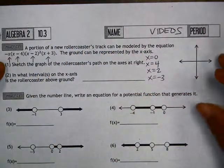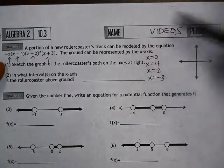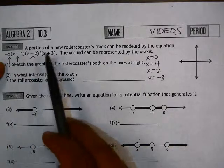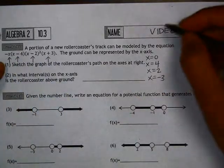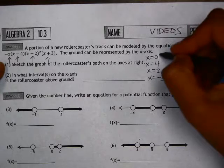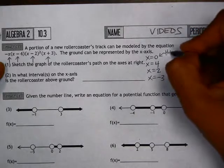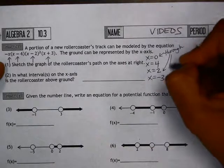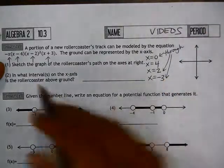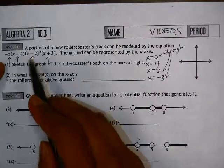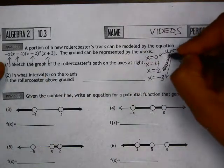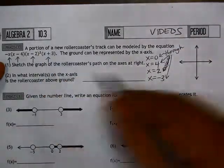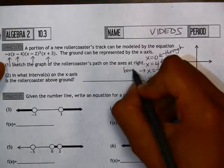We also need to make sure we know the behavior at each of these roots. 0, 4, and negative 3 are all to the first power, so those will all be going through. At 2, we have a squared, which means that this root will have a bounce.